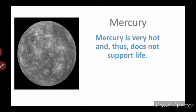The eight planets we have in our solar system are Earth, Mars, Mercury, Venus, Saturn, Neptune, Uranus, and Jupiter. Now we are going to learn in depth about all these planets, so listen carefully so you will understand the exact information about each planet.